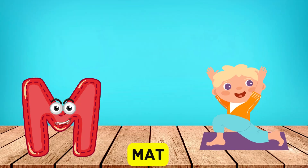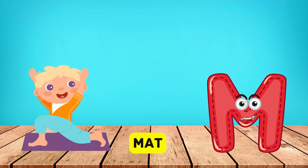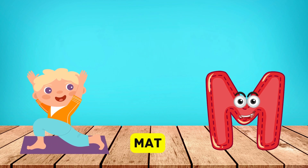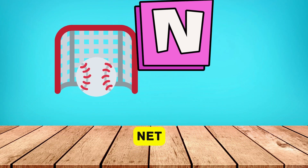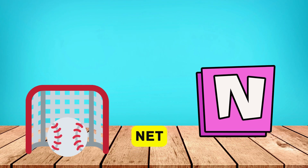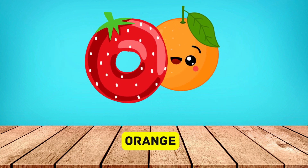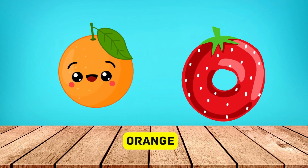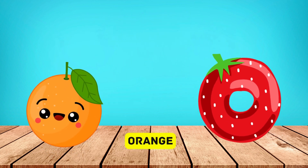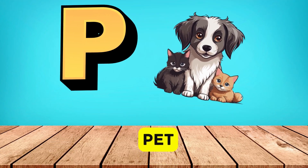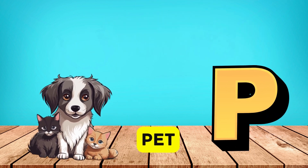M is for mat, m-m-mat. N is for net, n-n-net. O is for orange, o-o-orange. P is for pet, p-p-pet.